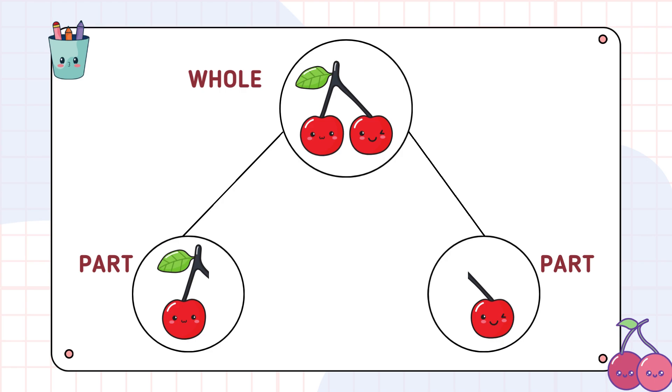The parts might look different and be different sizes or shapes, but together they make up the whole. So, why use this diagram? Because it visually shows how things are split or combined. It's super helpful in math and problem solving. Ready to see it in action? Let's look at some examples.